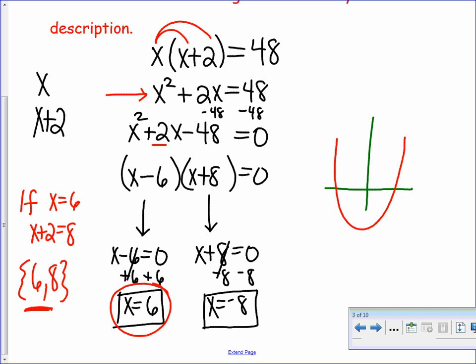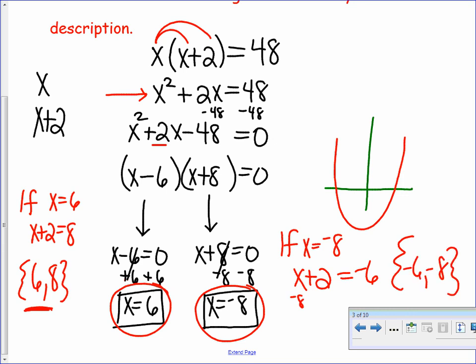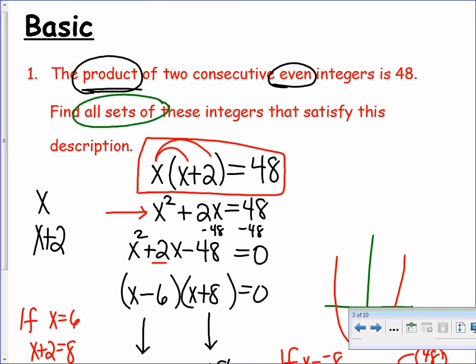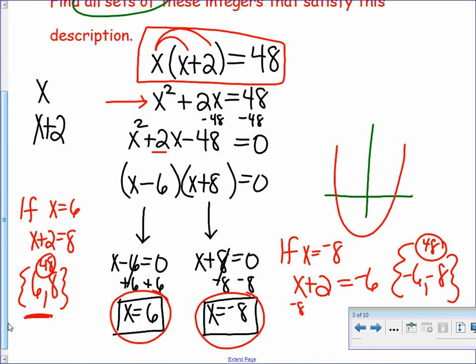Now, you may say, what do I do with this negative 8 over here? Well, now you come over here and you say, all right, well, what if x is negative 8? Well, if x is negative 8, then x plus 2, or negative 8 plus 2, would be negative 6. So that actually gives me another set of answers, which would be negative 6 and negative 8. And you can check it. If I multiply those together, do I get a positive 48? Yes, I do. So in both of these cases, I get a positive 48 when I multiply them together, which was what the problem asked me to find. So you see why it's worded in such a way where it says, find all sets of these numbers that satisfy this description? That's because I could have positive 6 and 8, or I could have a negative 8 and negative 6. Both of those sets would work.